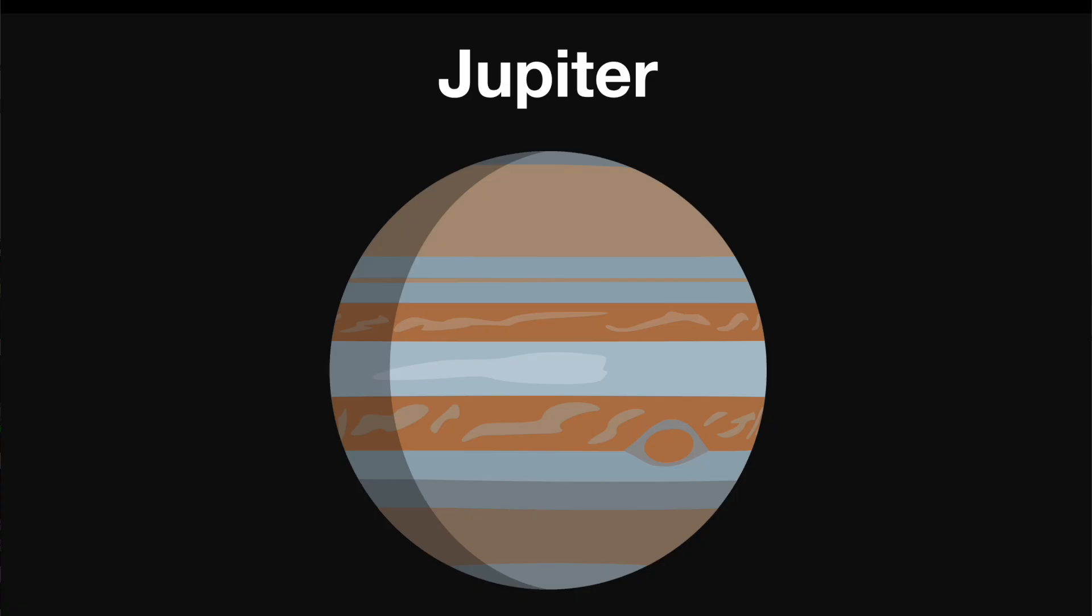Jupiter is the fifth planet from the Sun. It's the largest planet in our solar system. Jupiter is more than two times bigger than all other planets combined. So it's gigantic.